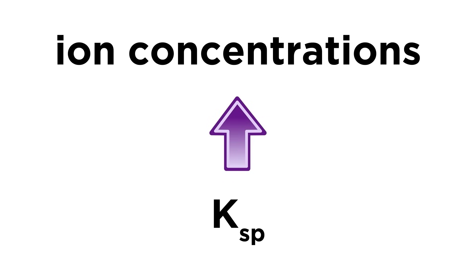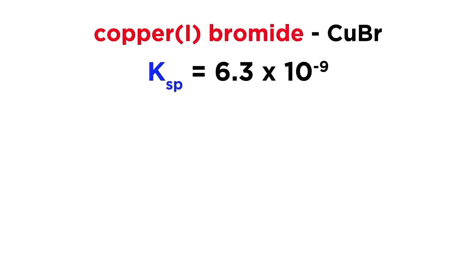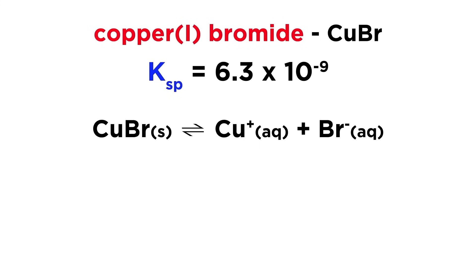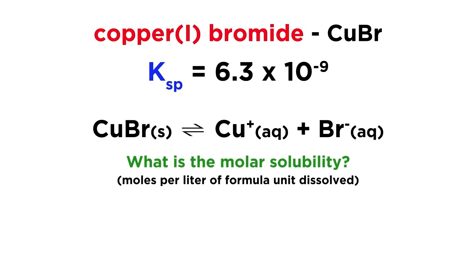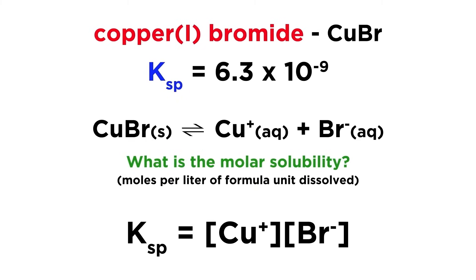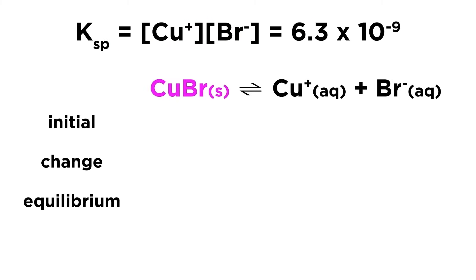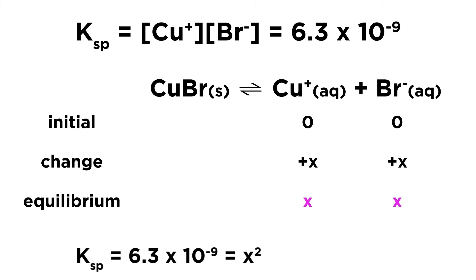We can also go the other way around, and predict the concentrations of ions that will result in solution when dissolving a substance with a given Ksp. Let's say we place copper(I) bromide, which has a Ksp of 6.3 times 10 to the negative 9, in aqueous solution, which will then generate copper ions and bromide ions to some extent. What will be the molar solubility of this substance, meaning how many moles per liter of the formula unit will dissolve? To find this, we can write the solubility product expression and use this to construct a simple ICE chart. The ions themselves will start at zero. The change will be x because of the 1-to-1-to-1 ratio, and this means that the equilibrium concentrations of the ions will also be equal to x. Therefore the Ksp will be equal to x squared, and x will be 7.9 times 10 to the negative 5 moles per liter. This is the molar solubility of copper(I) bromide, which in this case is simply the concentration of copper ions and bromide ions in solution at equilibrium.